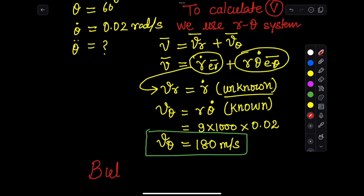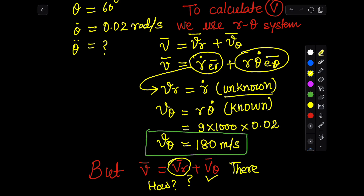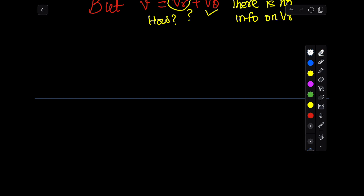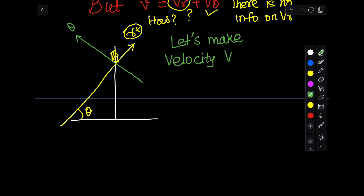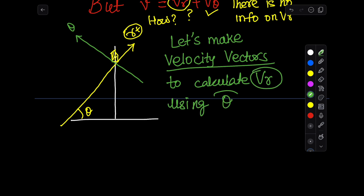We obtained the v-theta value, but vr and the total velocity v are still unknown, and we do not have enough information directly. So we look for another approach — making a velocity vector diagram. We go back to the figure and draw the r-coordinate and theta-coordinate axes.